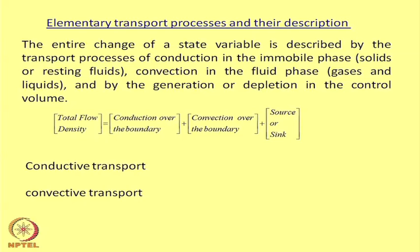The governing process in fluid mechanics — looking at elementary transport processes and their descriptions — shows that the change of any variable is described by the transport process of conduction in the mobile phase. The governing equation can be written as: the total flow of any parameter — energy, mass, or momentum — defined over a control volume consisting of six faces. Through all six faces there can be transport of momentum into the control volume, there can be convection due to fluid flow, and there can be some source or sink.